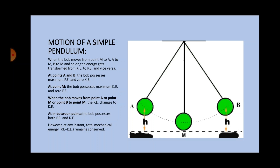When the bob moves from point M to point B, the kinetic energy starts changing to potential energy. At point B, it has maximum potential energy and zero kinetic energy. As the bob moves from point B to point M, again the potential energy changes to kinetic energy. At point M, the bob possesses maximum kinetic energy and zero potential energy. At any in-between points, say between A and M or B and M, the bob possesses both kinetic energy and potential energy.